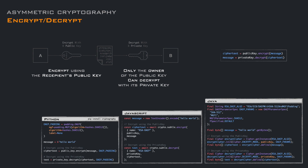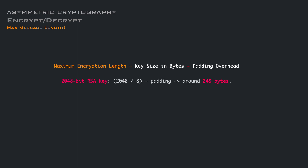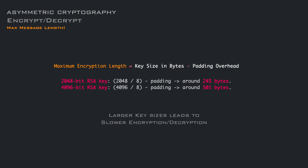Everything looks easy. Unfortunately, there is one thing that we overlooked. The maximum message length that we can encrypt with an asymmetric encryption algorithm is limited and proportional to the key size. For example, with an RSA key of 2K, we can encrypt only around 245 bytes, and with a key of 4K, we are around 500 bytes. A larger key size leads to slower encryption and decryption operations due to the intensive mathematical computation required. So encrypting large messages directly with asymmetric encryption can be impractical.